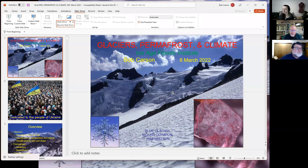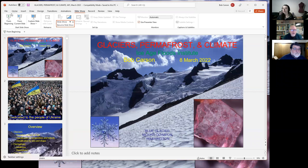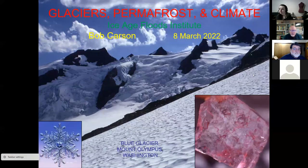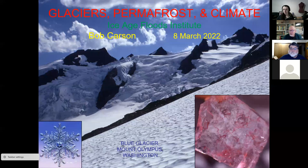I wish we were standing looking at the Blue Glacier on Mount Olympus, but here we are on Zoom. In the lower left is a snowflake. And if we compact them and melt them, pretty soon we have glacier ice, which on the lower right picture, the boundaries between the ice crystals which are centimeters across are shown by a mixture of red dye and alcohol.